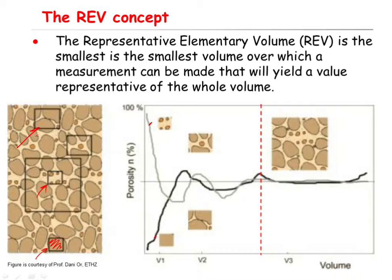So let's say we choose this window as our sampling size. Here, you will still have the same problem, because the value of the porosity will depend on the location of your measurement. For example, compare this location and this location — here you will have a higher porosity compared to this one, because here you have more void space. So this means this size is not large enough to represent the entire sample.